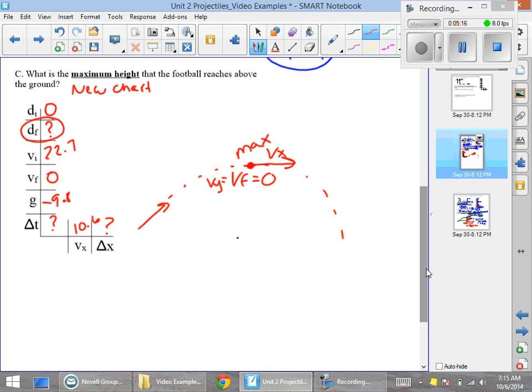So now that we know that, the best equation here is to use vf squared equals vi squared plus 2a(df minus di). So now it's just a matter of plugging in numbers: 0 equals 22.7 squared plus 2 times negative 9.8 times df. So if you crunch all that math through, you end up with 26.3 meters.